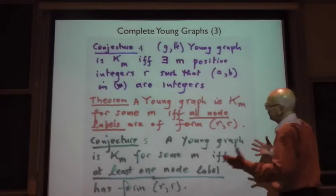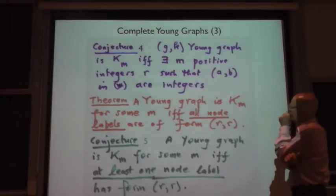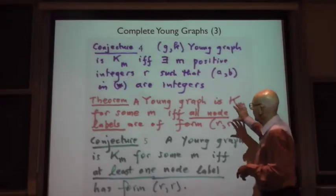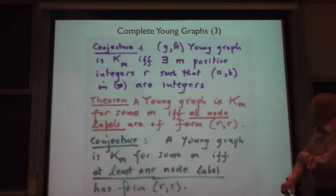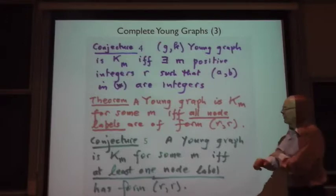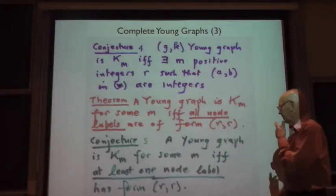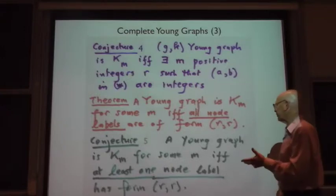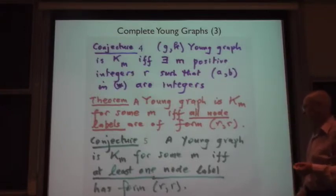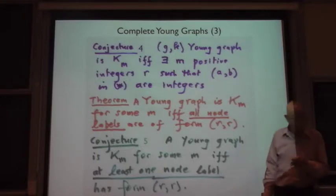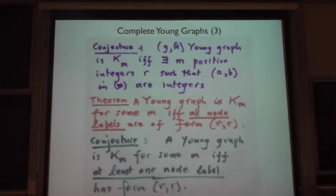You can prove, I can prove parts of them, but not the whole thing. One thing I can prove is that you get the complete graph on M nodes if and only if all the node labels have the form RR. But what seems to be true is a much stronger fact that if any one of the nodes has a label in the form RR then you get the complete graph.